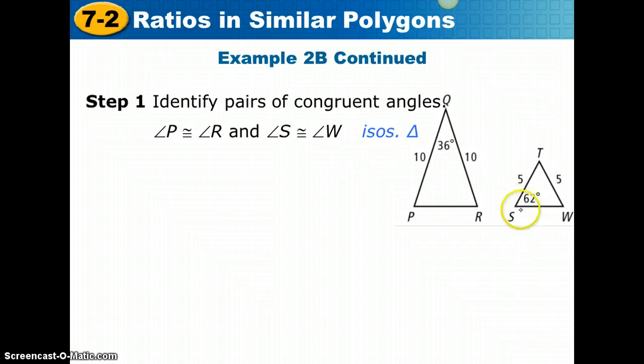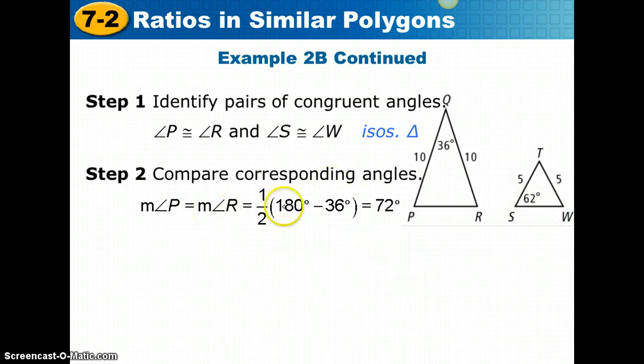Angle P and R must be congruent, and angle S and W must be congruent. The measure of angle P and measure of angle R must be half of the difference of 180 and 36. I do 180 degrees minus 36 to find out what the sum of these two would be, and then divide it in half. So each angle measures 72 degrees for P and R.